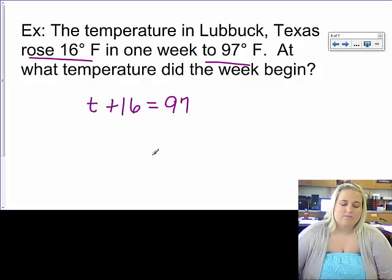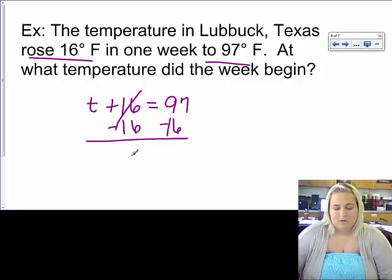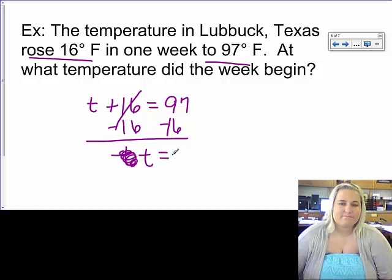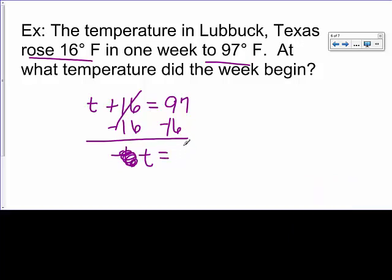To get T by itself, all I need to do is subtract 16. What I do to one side, I must do to the other. 16s will cancel. T comes straight down. That is a 6. I'm really sorry. T comes straight down. Equals 97 minus 16. Which is going to be 81 degrees Fahrenheit. Final answer.